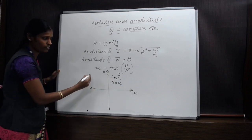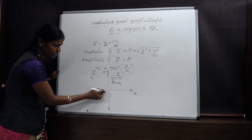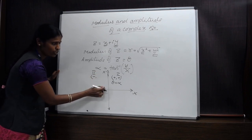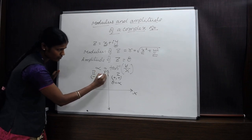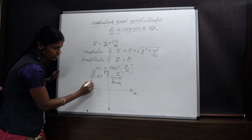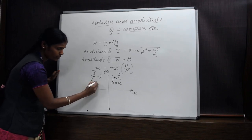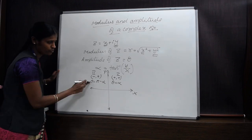θ = α in the first quadrant. But in the second quadrant, x is negative and y is positive. Therefore θ = π − α. We need to consider π − α to find θ in the second quadrant.